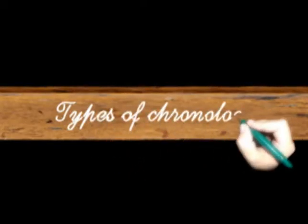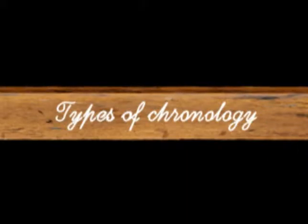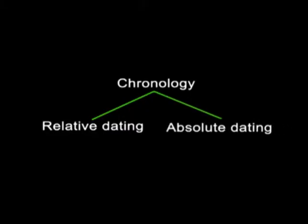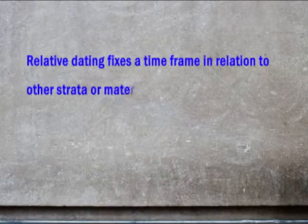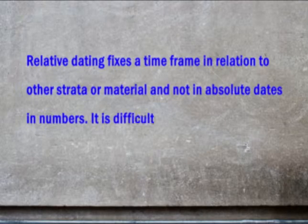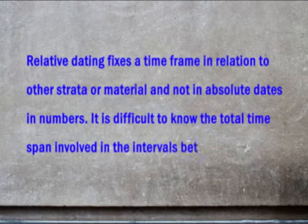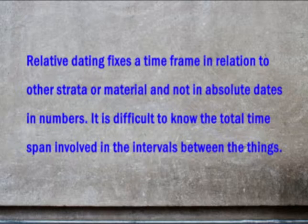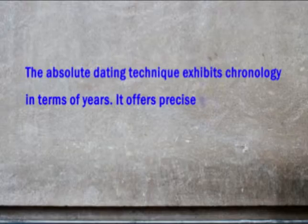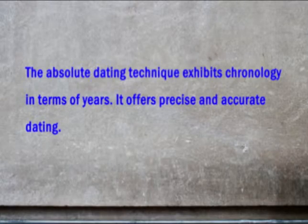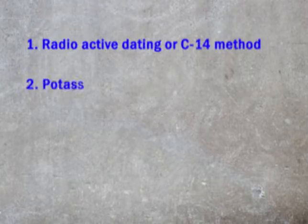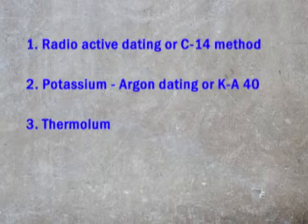Now let's come to the types of chronology. There are mainly two types of dating methods. The first one is relative dating and the second one is absolute dating. Relative dating fixes a timeframe in relation to other strata or material, and not in absolute dates or numbers. It is difficult to know the total time span involved in the intervals between things. On the other hand, the absolute dating technique expresses chronology in terms of years. It offers precise and accurate dating. Some common and widely applied absolute dating methods are radiocarbon dating or C-14 method, and potassium-argon dating.